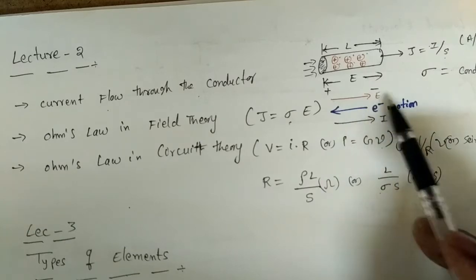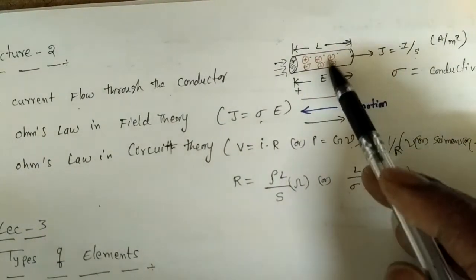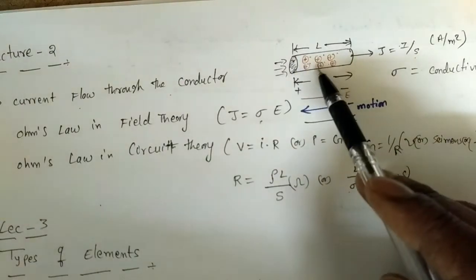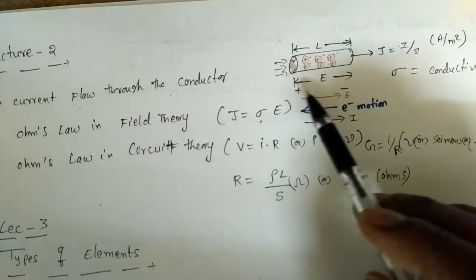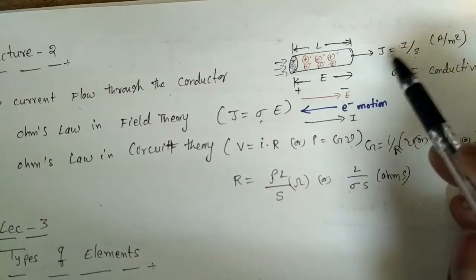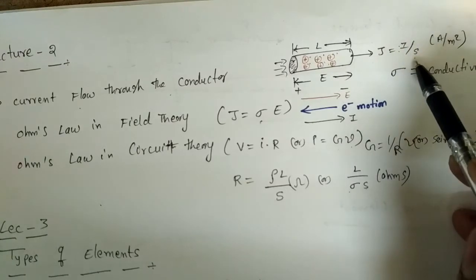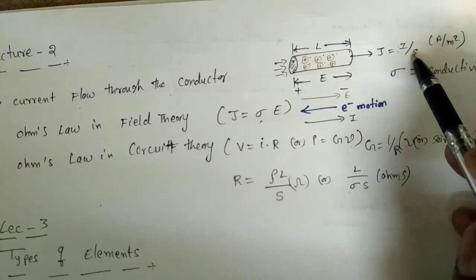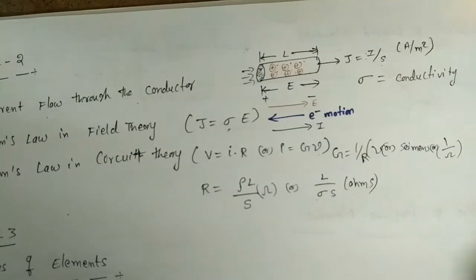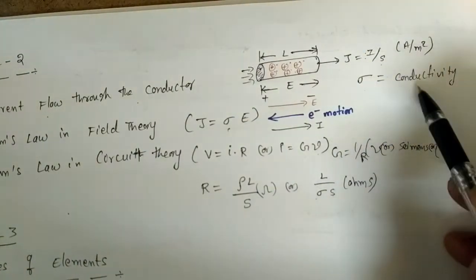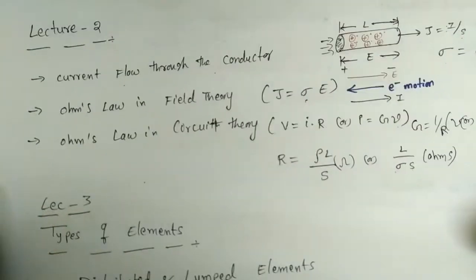When charge flows from one place to another through a cross-sectional area, current flows. The current density J is equal to current per unit area, that is, J = I/S, and the units are amps per meter squared.